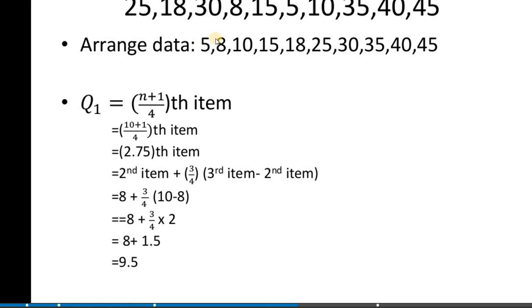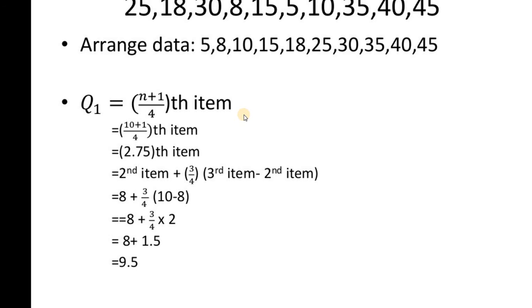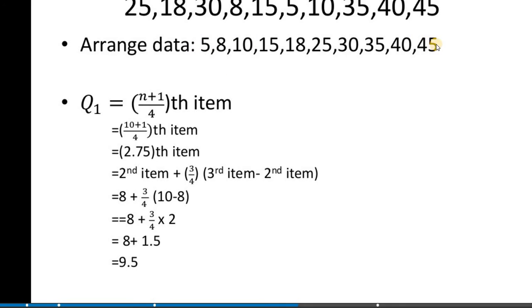Arranging in ascending order: 5, 8, 10, 15, 18, 25, 30, 35, 40, 45. Q1 equals (n+1)/4 th item. Which one is n? N means number of items. There are 10 items. So 10 plus 1 divided by 4 gives 2.75th item.